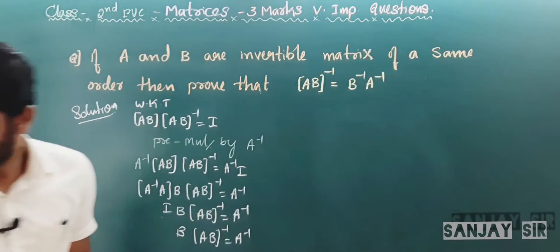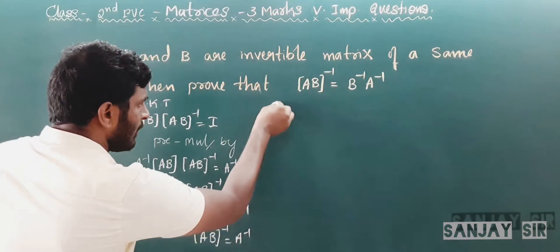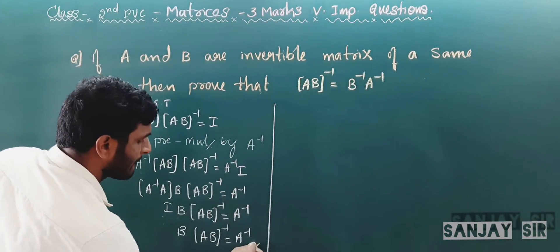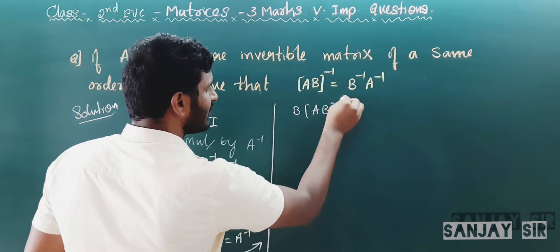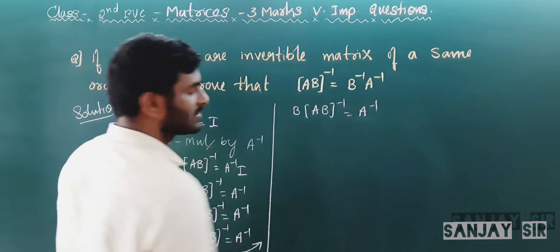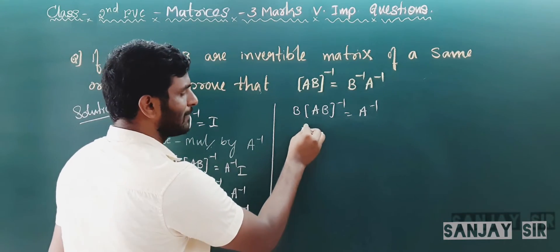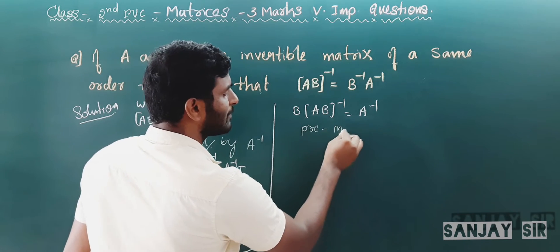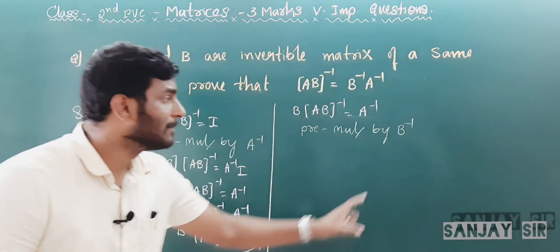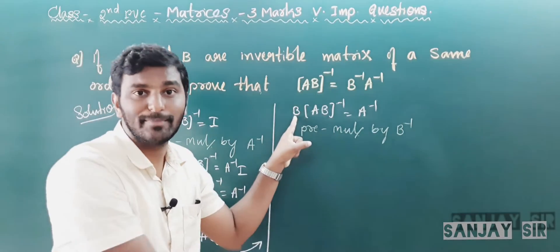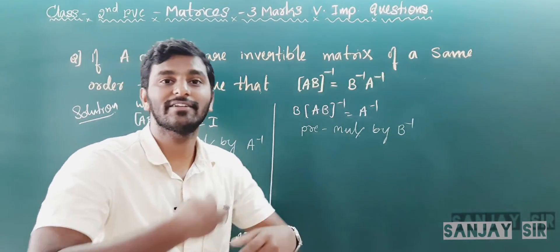Now we have B · (AB)⁻¹ = A⁻¹. We need to pre-multiply again, this time by B⁻¹. If we multiply by B⁻¹, we will get I, and I times these remaining terms gives us the final answer.